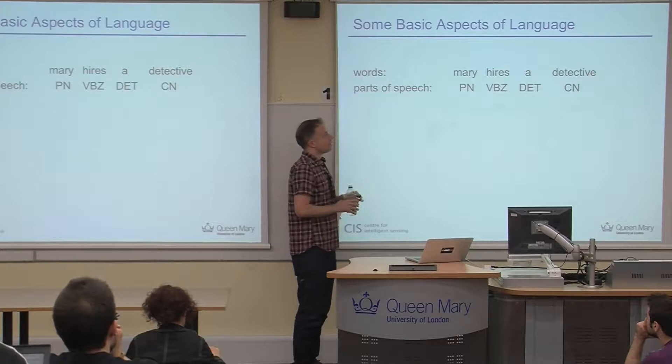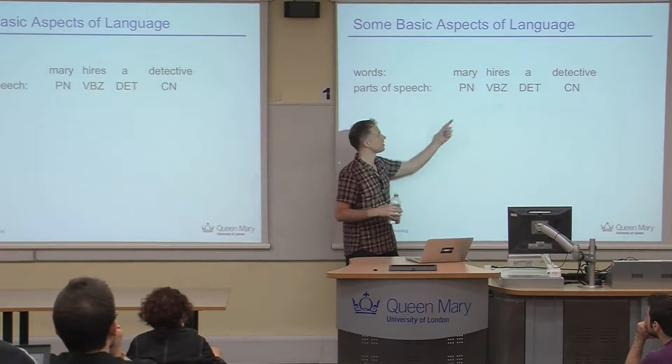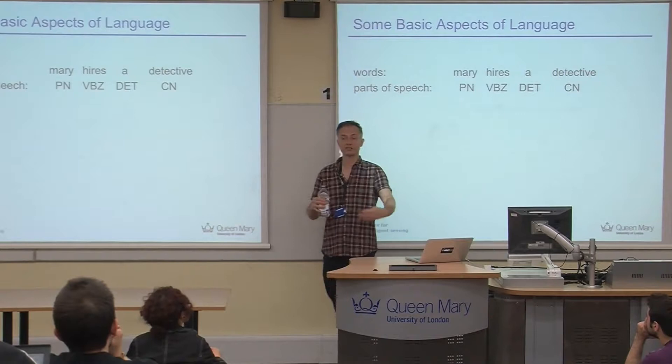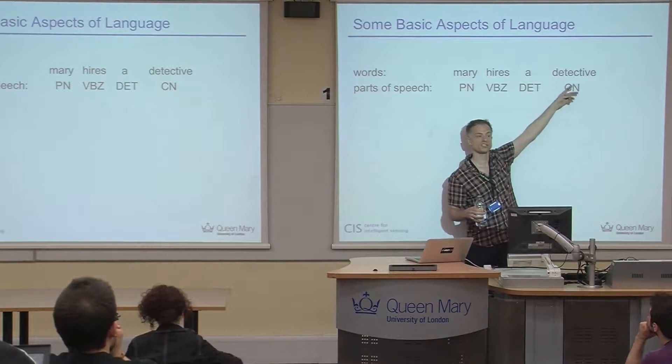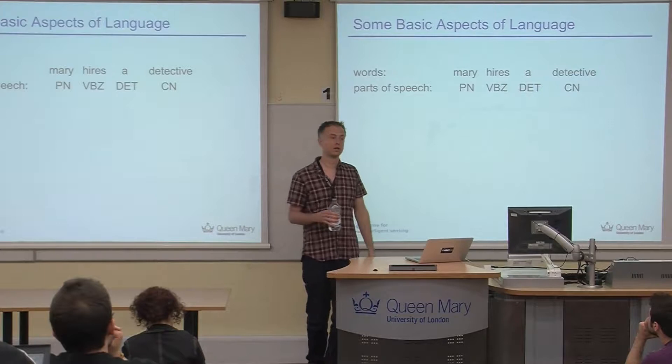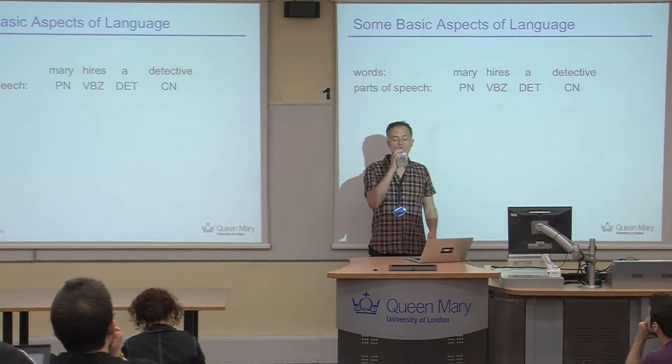Computational linguists spend a lot of time attaching structure to words to understand how they go together. The first thing you might do is part-of-speech tagging. We're all intuitively familiar with the idea that words fall into different grammatical classes: proper names that refer to objects, verbs that talk about actions and events, nouns describing general classes of things, and little function words like determiners that don't refer to the world but play an important structural role.